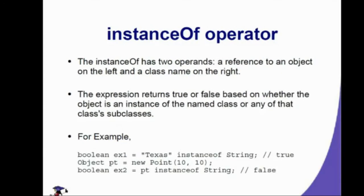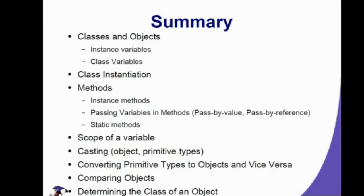The 'instanceof' operator has two operands: a reference to an object on the left and a class name on the right. For example, 'texas instanceof String' is true because texas is a String. However, 'Point pt = new Point(10, 10); pt instanceof String' is false because pt is an object of type Point, not a String. That ends our discussion about working with the Java Class Library.